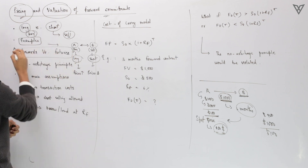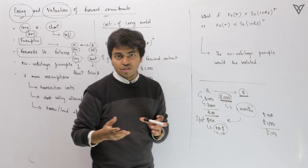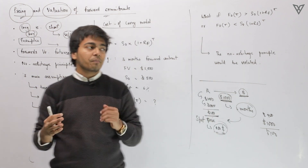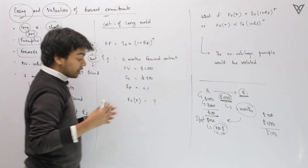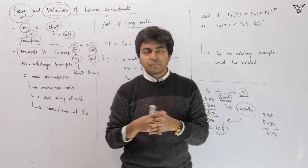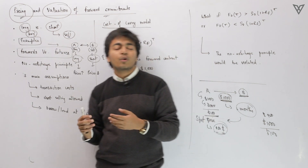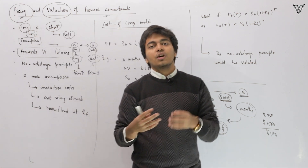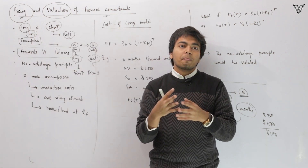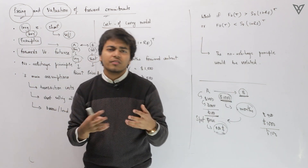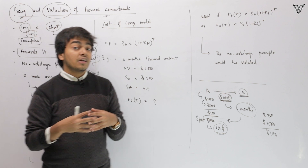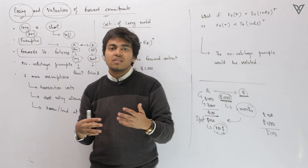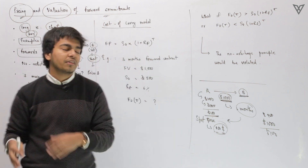The good part about a forward contract is you do not really have to pay anything at initiation — this is just a contract you need to enter, and settlement happens after expiration. On the other hand, in futures you need to pay the initial margin, so some money goes out of your pocket at time period zero. However, by paying that initial margin, you ensure there is very little probability of default in futures, whereas in a forward contract there is a probability of default because it is an OTC over-the-counter contract with no exchange or clearing house involved.